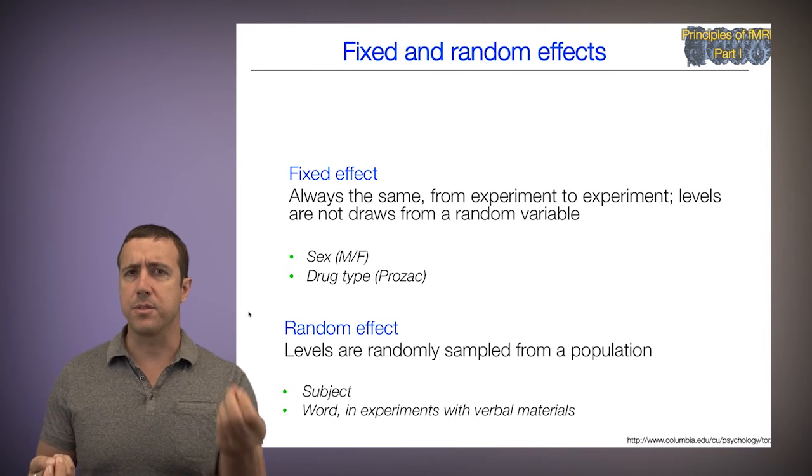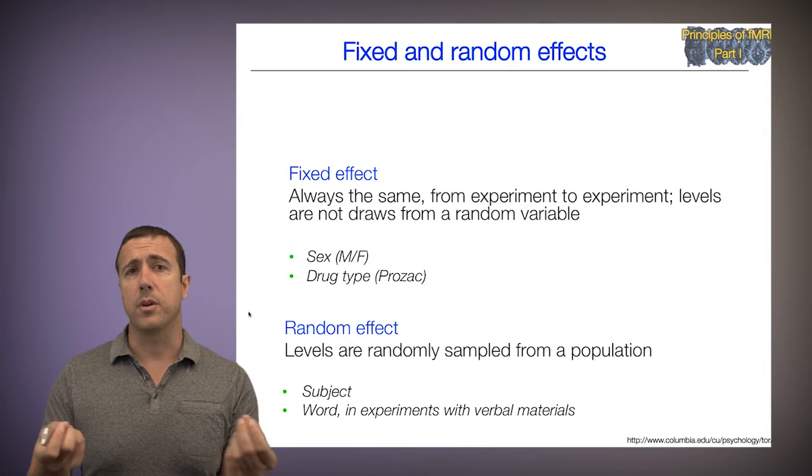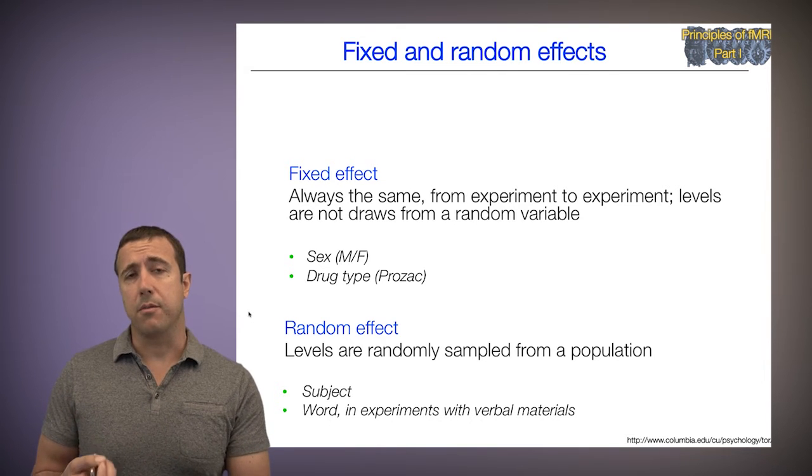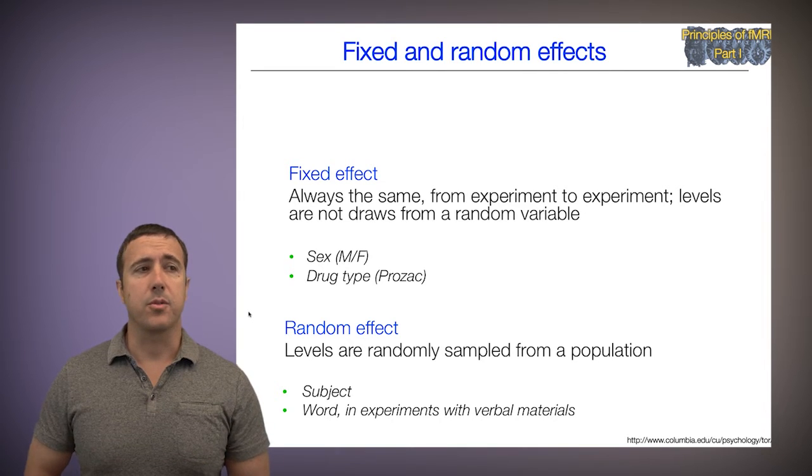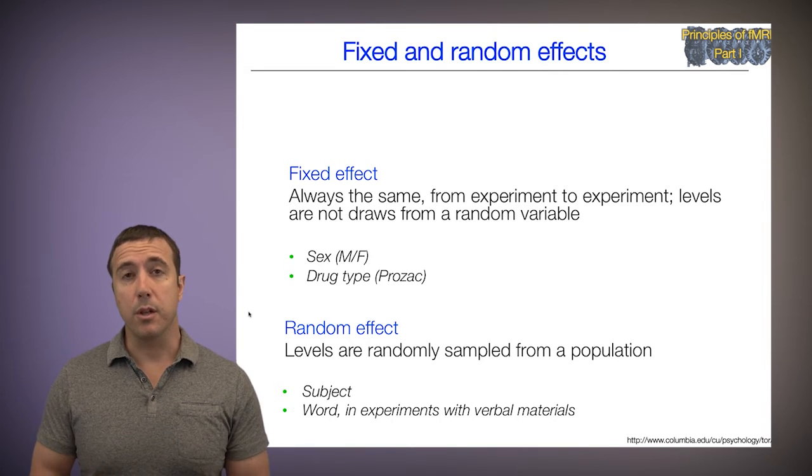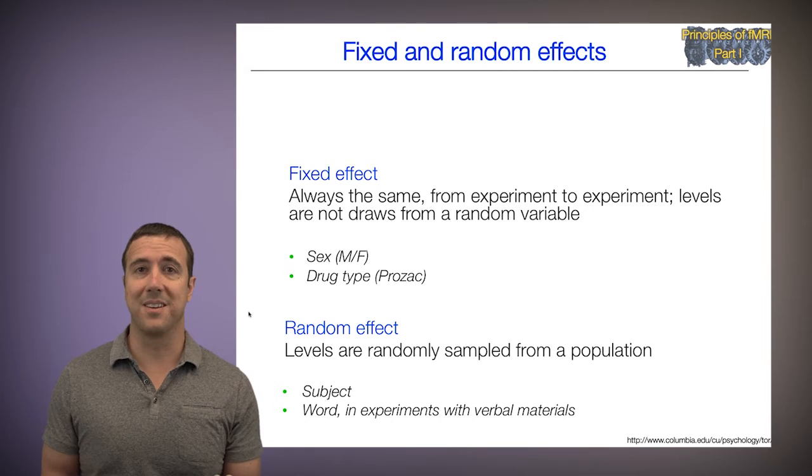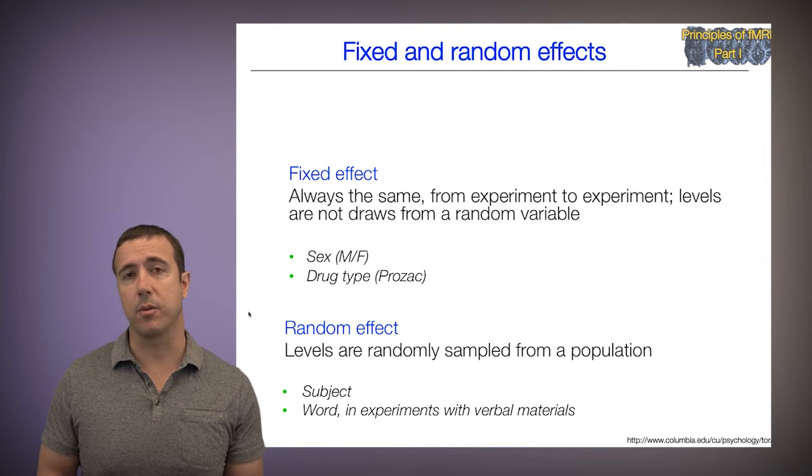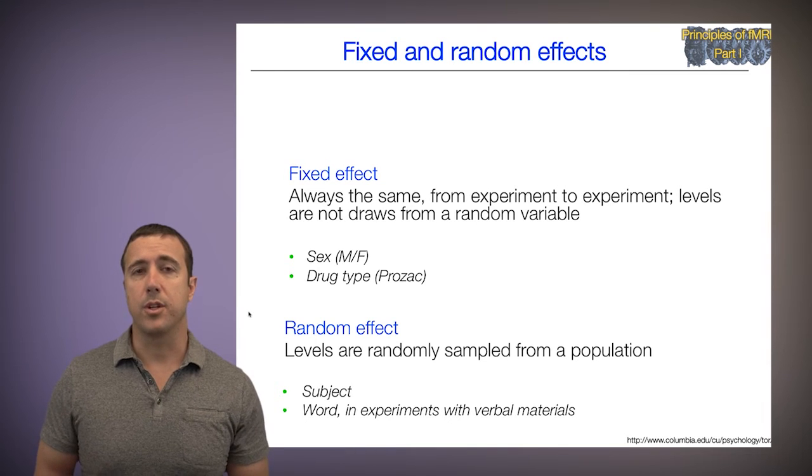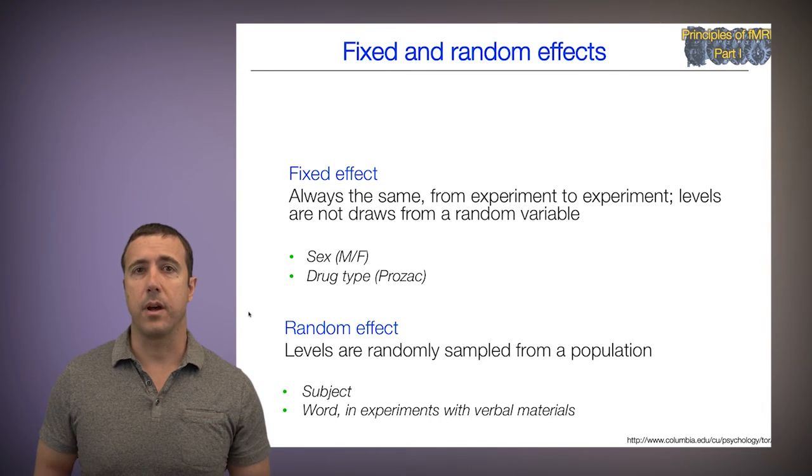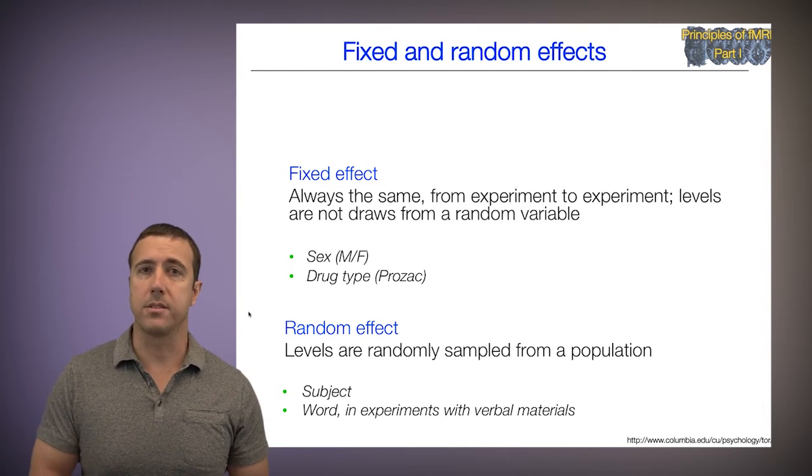And you only choose one positive word, which is puppies, and one negative word, which is murder. And you do a scan where you compare puppies and murder. Well, they differ in positive versus negative, but they also differ in many other features as well. So you might first include a whole population of words, many kinds of positive and negative words. And then you might want to model word as a random effect, so that you can generalize to unobserved words as well drawn from the population of negative or positive words.